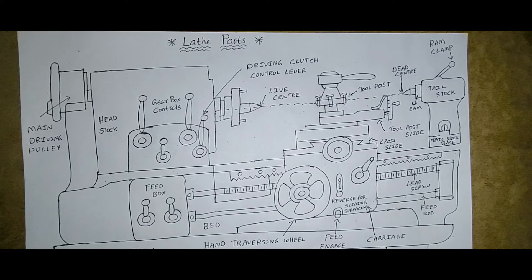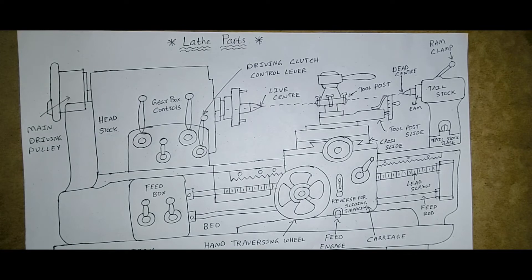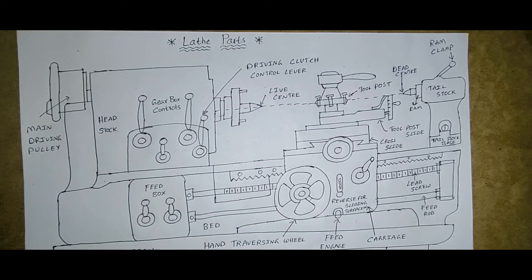In the Metrology and Machine Tools subject, the most important topic under machine tools is the lathe — the lathe parts, the lathe machine, how we have to draw the lathe machine, and how to label the parts. We will discuss this in today's class. I have prepared a diagram to make it very clear and easy, and we will discuss how to draw this diagram.